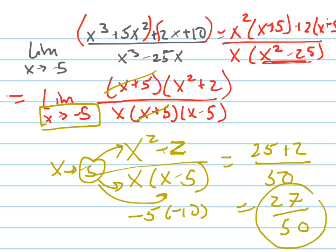And that's your limit, because that's the hole that's in the graph. Negative 5 comma 27 fiftieths is the hole that's in the graph.